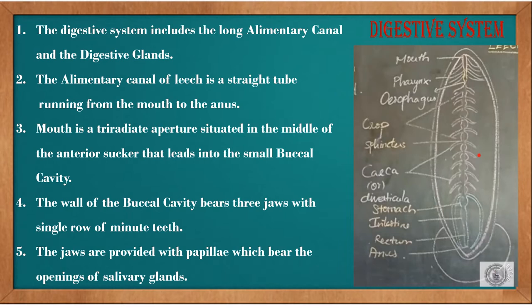Where do you find the anterior sucker? It is found in segments one to five of the leech body. The mouth leads to the buccal cavity.